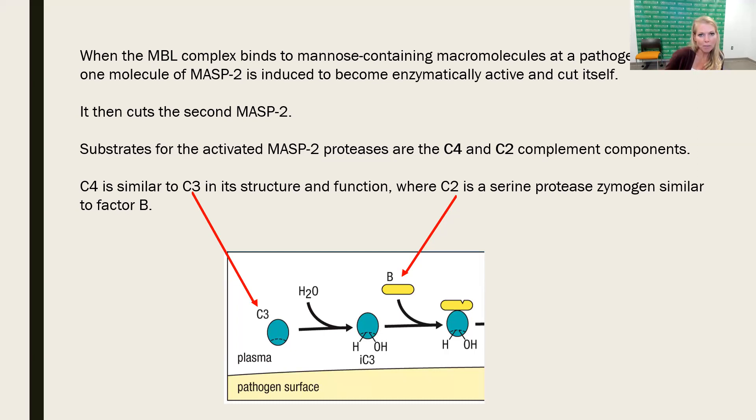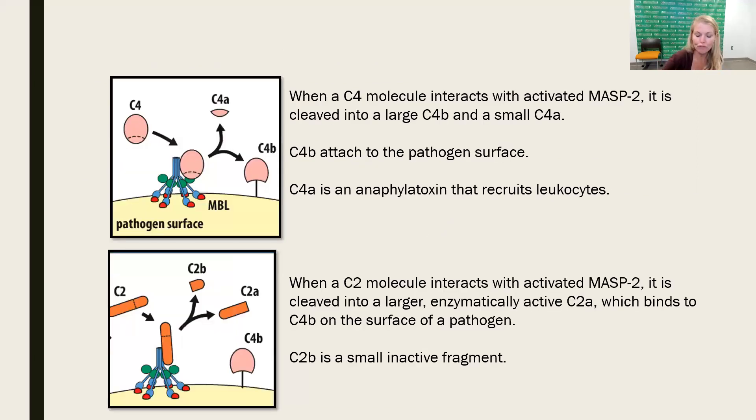We have this mannose-binding lectin attached to the surface of the pathogen. We have our MASP proteins, and they're going to cleave and become active serine proteases that are going to act on C4. C4 will come in, interact with MASP2, which is now an active serine protease, and it will cleave C4 into C4A and C4B. C4B will bind to the surface of the pathogen and C4A will go away. That pattern is similar to what we've seen happen in the past.